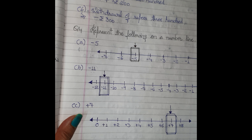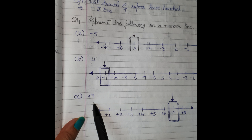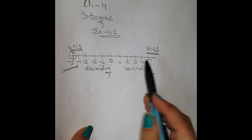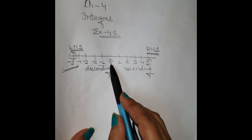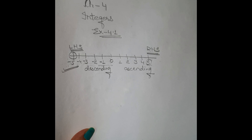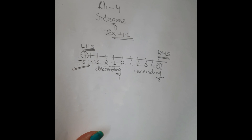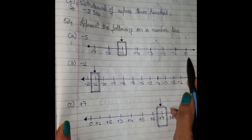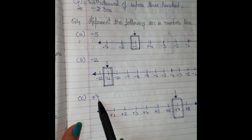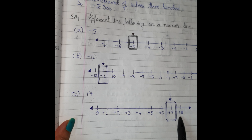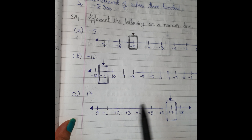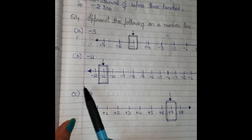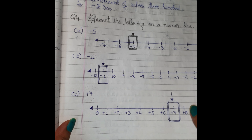For part c, positive seven: draw the number line towards the right side (positive side). Zero comes at the beginning on the positive side. Divide the line into parts — plus one, plus two, plus three up to plus seven, plus eight. Draw a box on plus seven with an arrow to represent it.